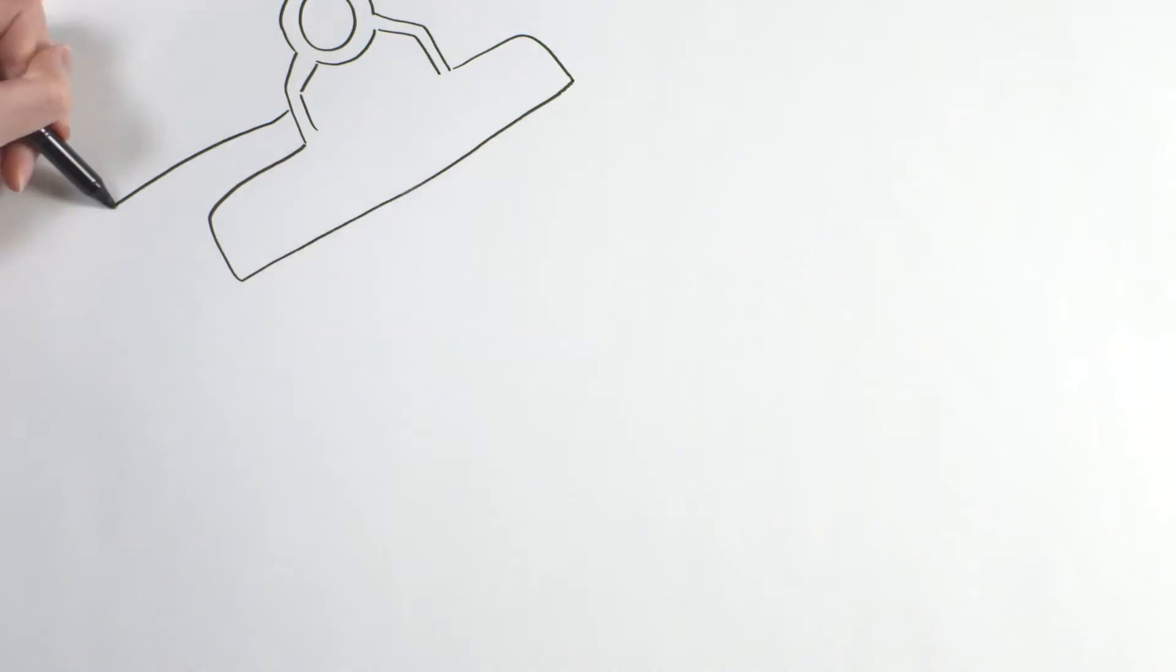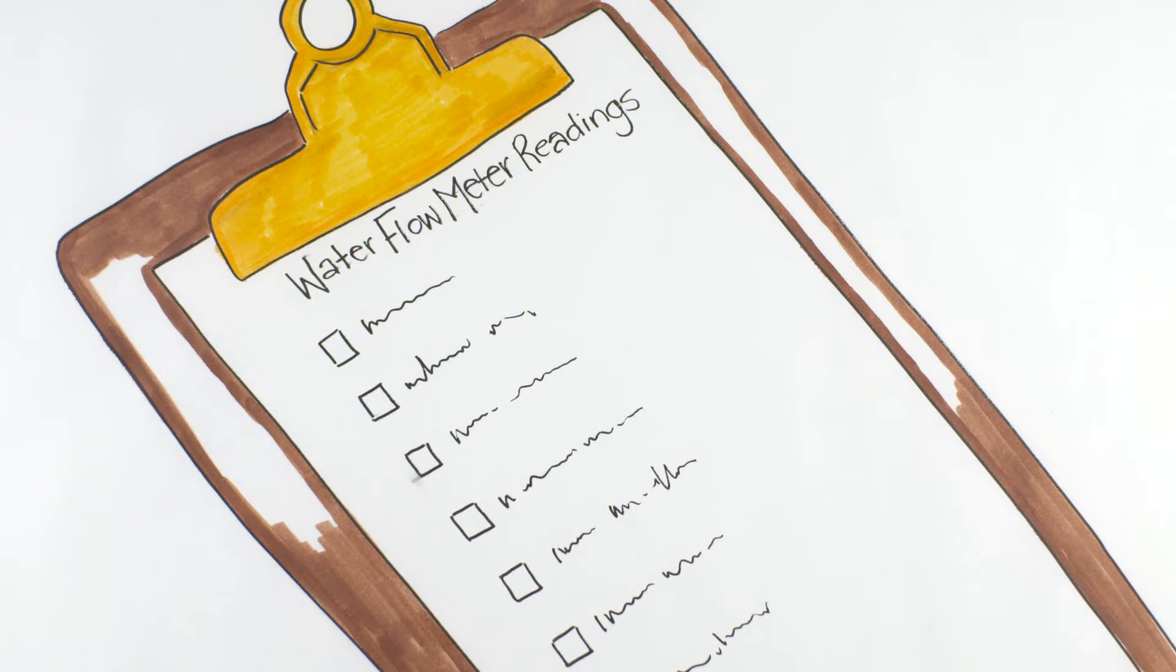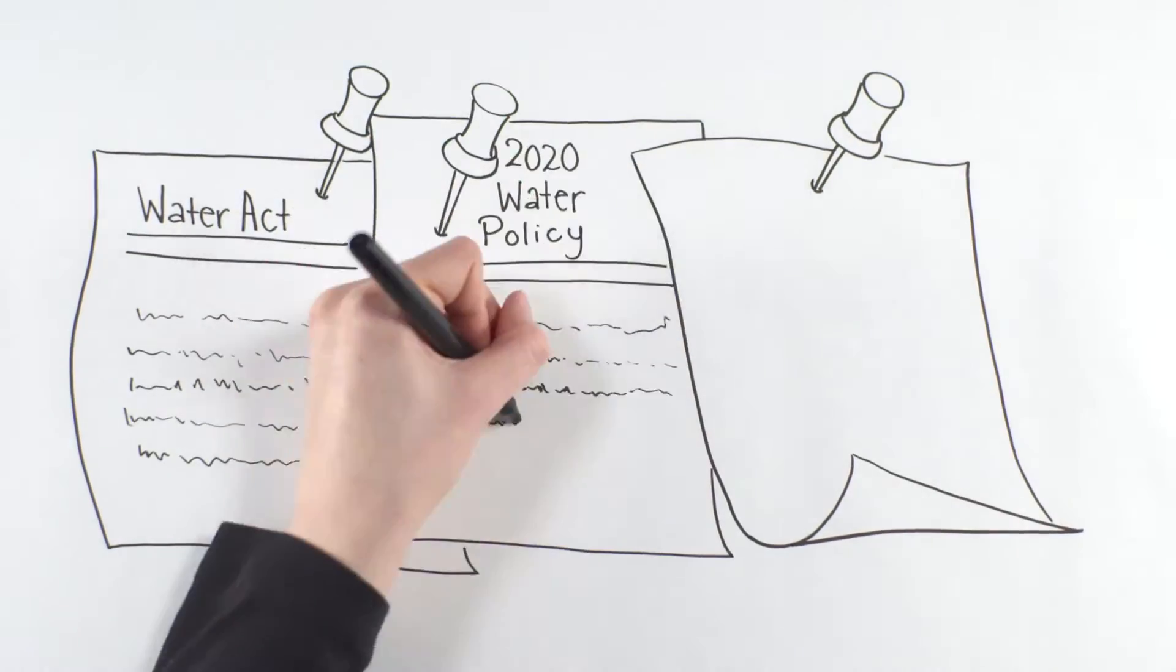More concern over water availability will likely lead to more active monitoring of water use in all agricultural sectors, which will then influence how policies and regulations are formed to ensure we're all doing our part.